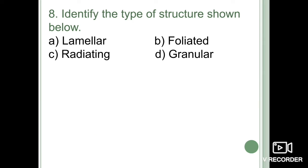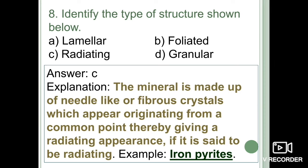Next question: identify the type of structure — lamellar, foliated, radiating, or granular? When a mineral is made up of needle-like or fibrous crystals that appear to originate from a common point, giving a radiating appearance, it is said to be radiating in form. The best example is iron pyrite (FeS₂). The correct option is option C: radiating.